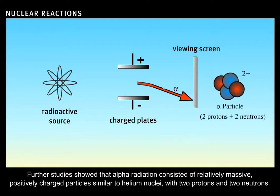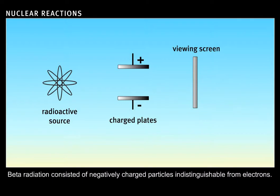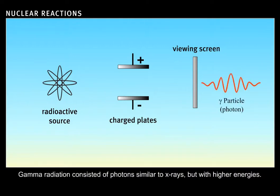Further studies showed that alpha radiation consisted of relatively massive, positively charged particles similar to helium nuclei, with two protons and two neutrons. Beta radiation consisted of negatively charged particles indistinguishable from electrons. Gamma radiation consisted of photons similar to x-rays, but with higher energies.